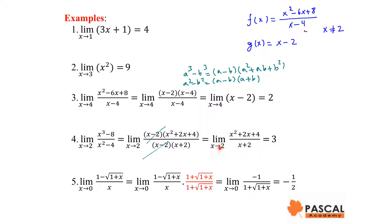When x is getting close to 2, x² + 2x + 4 is getting close to 12, and x + 2 is getting close to 4. Therefore, the given limit is 12/4, which is 3. Example 5: to find the limit of (1 - √(1 + x)) / x as x approaches 0, we rationalize the numerator by multiplying both the numerator and the denominator by 1 + √(1 + x). The limit becomes the limit of -1 / (1 + √(1 + x)) as x approaches 0, which is -1/2.